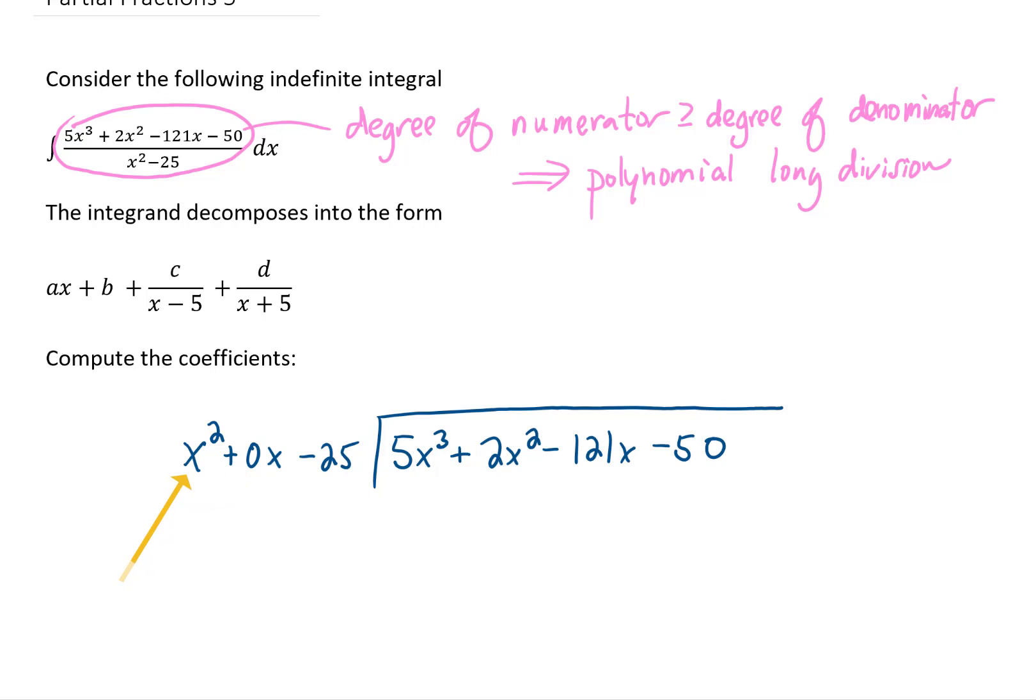But the first question we need to ask is, what do we multiply x squared by to get 5x cubed? The answer is 5x. Actually multiplying that 5x through this polynomial gives us 5x cubed, as expected, plus 0x squared minus 125x. What we then do is we subtract. 5x cubed minus 5x cubed is 0. That's what we wanted. 2x squared minus 0x squared is 2x squared. Subtracting here is going to give us a 4x, and we bring down the next term, which gives us a 50.